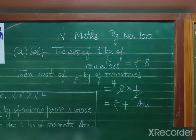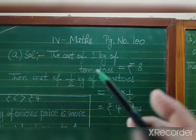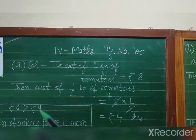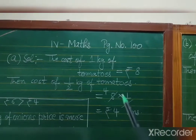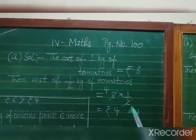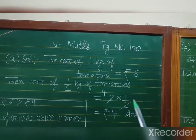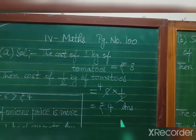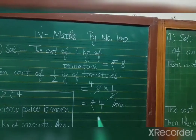Solution of question A: The cost of 1 kg of tomatoes is equal to rupees 8. The cost of half kg of tomatoes is equal to 8 into one-half, that means 8 divided by 2. So the cost of half kg of tomatoes is equal to rupees 4.